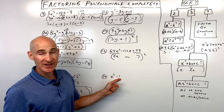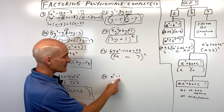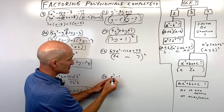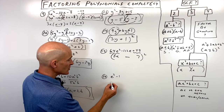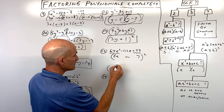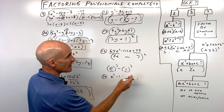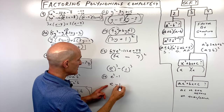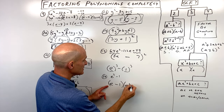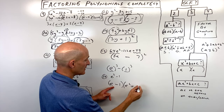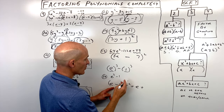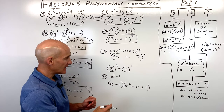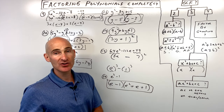Number sixteen, e cubed minus 1. No greatest common factor, two terms. Is it a difference of two squares or a difference of two cubes? It's a difference of two cubes, because 1 cubed is 1 and e cubed is e cubed. In our formula, a is e and b is 1. Using same, opposite, always positive: e minus 1, times e squared plus e plus 1 squared which is 1. We can't factor further — fully factored.